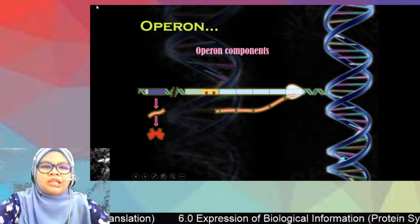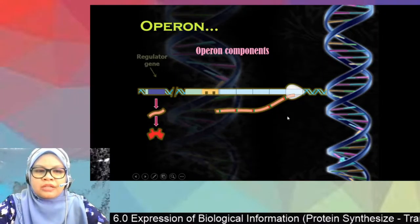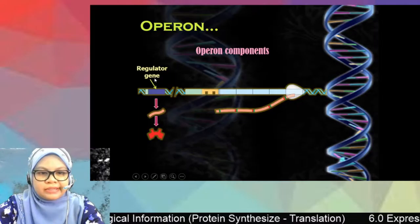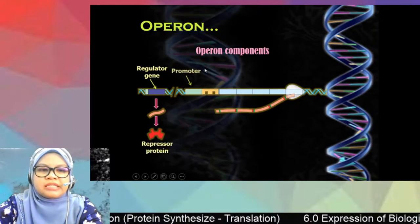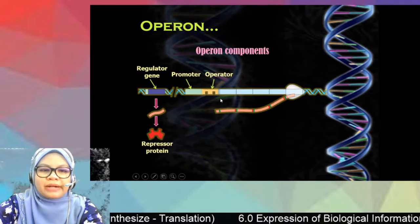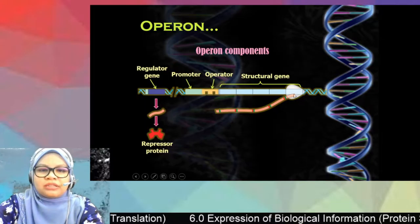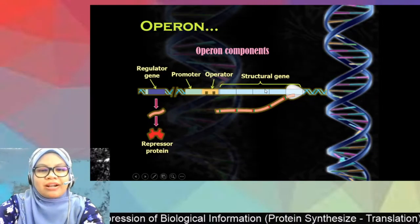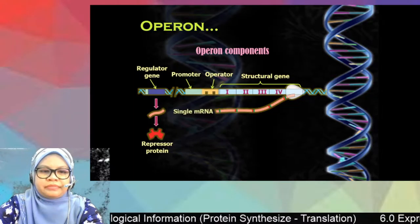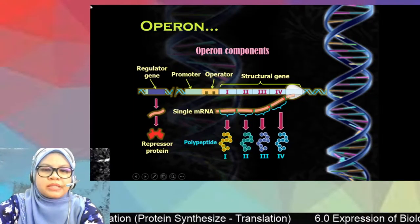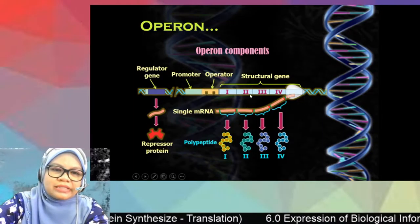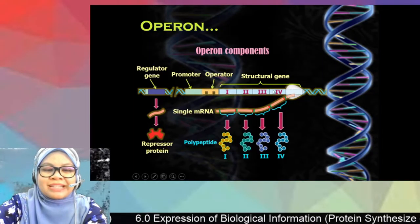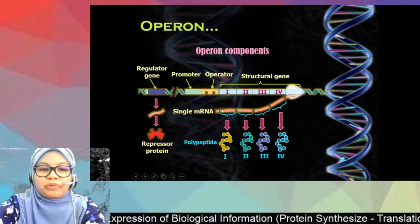Let's take a look at the structure of the operon system. The four components are: first, the regulator gene; second, the promoter; third, the operator; and fourth, the structural gene. The structural gene is a double strand of DNA, which provides the genetic information for transcription to produce mRNA.